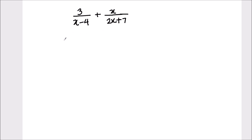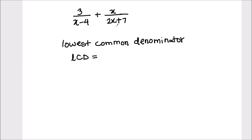The first step is to find the LCD, or the lowest common denominator of the fractions. As there is no common term between the two denominators, the LCD will be the product of both denominators — that's going to be x minus 4 times 2x plus 7.